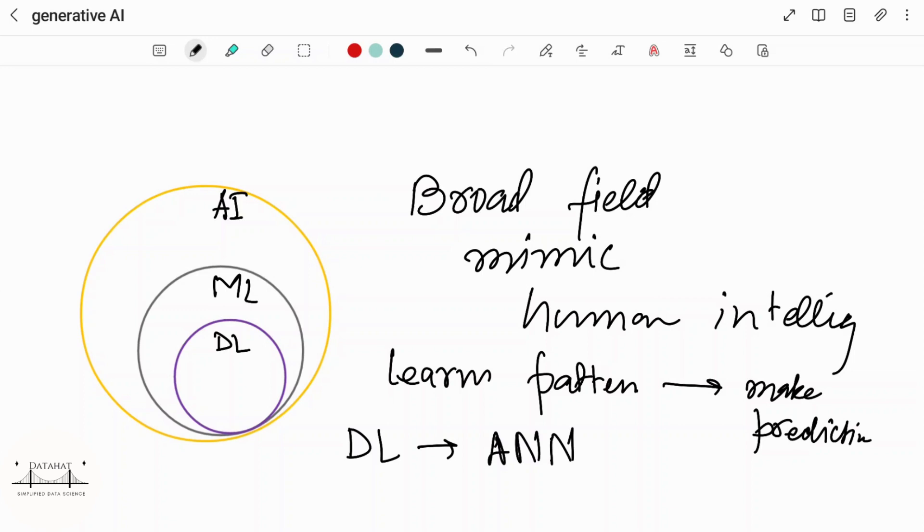In this overall scenario of Artificial Intelligence, Machine Learning, Deep Learning, Generative AI is a special category within the Deep Learning. Generative AI models tries to create newer content using Artificial Neural Networks.